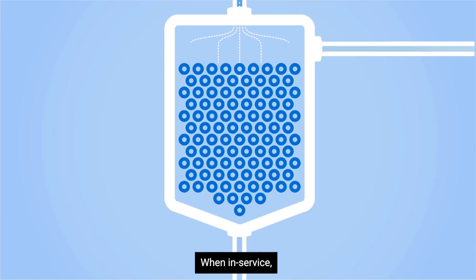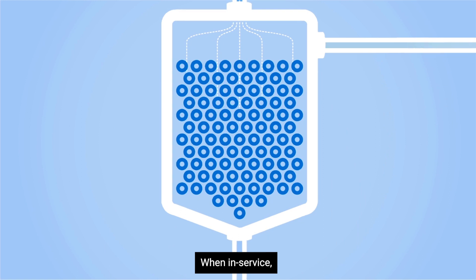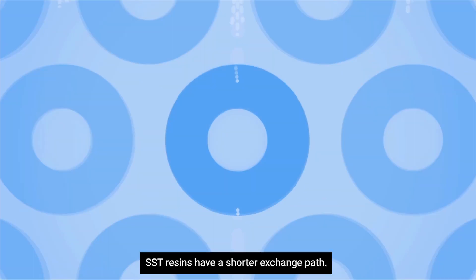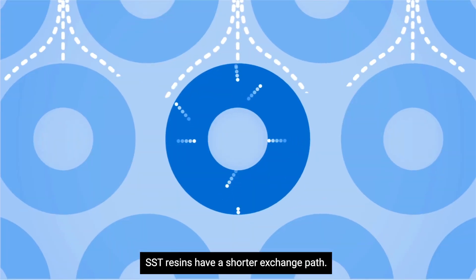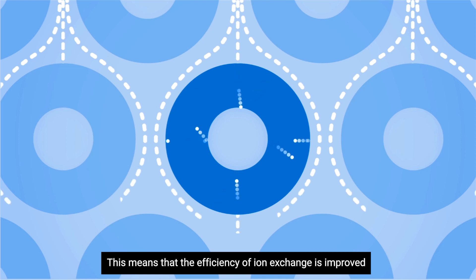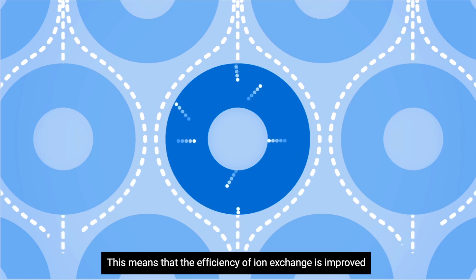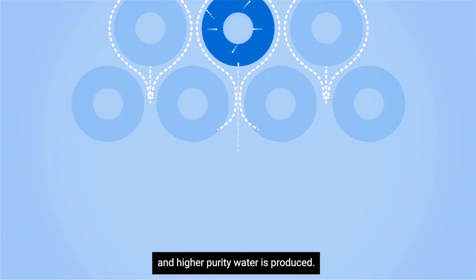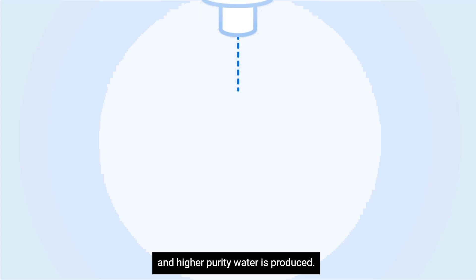When in service, SST resins have a shorter exchange path. This means that the efficiency of ion exchange is improved, and higher purity water is produced.